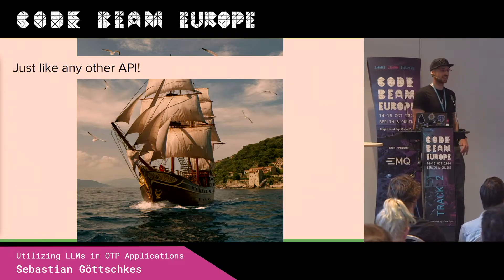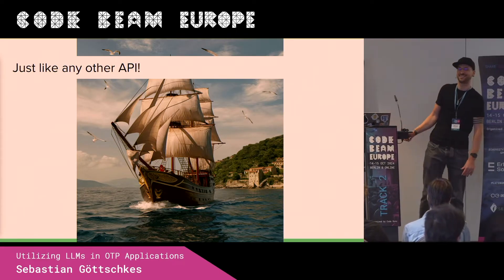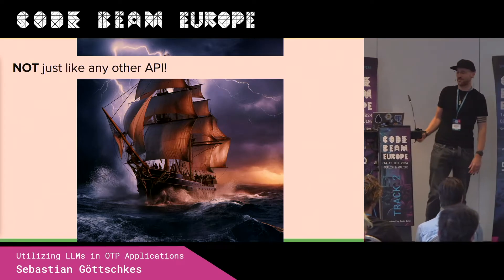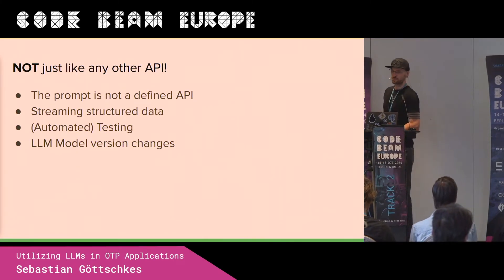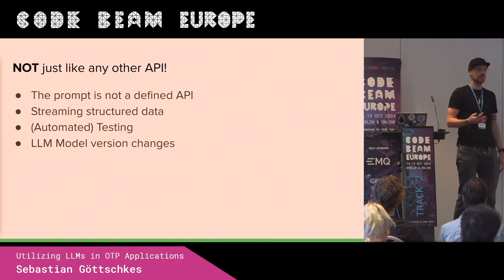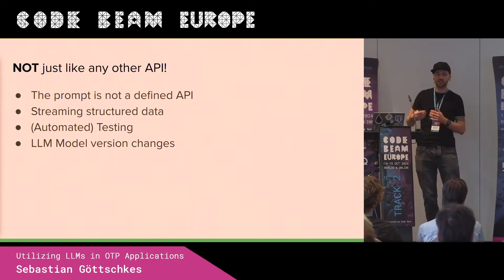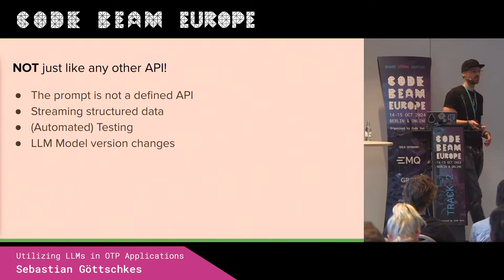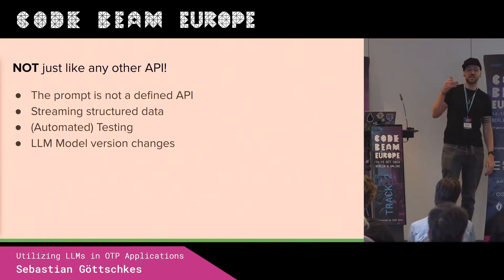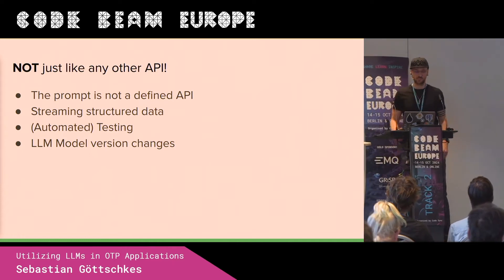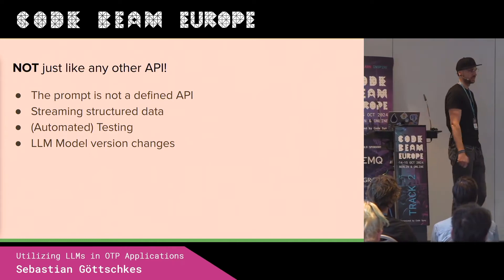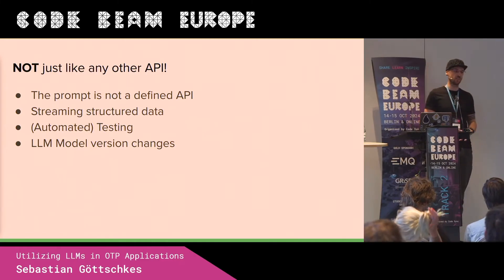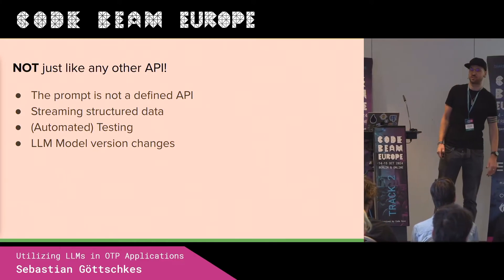So adding an LLM is just like any other API — not so fast, it's actually not just like any other API. It's a little bit more complicated, because the prompt that you send in is not a defined API. While the JSON structure is very defined, the prompt which actually triggers the LLM to do something is not well defined. You might also want to stream the output directly to your user, which causes problems. You might want to test your application and run into various issues, and in addition to API version changes — which are not that frequent — you have model version changes, which change a lot.